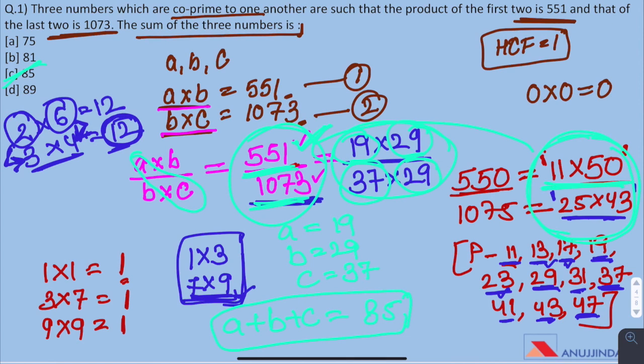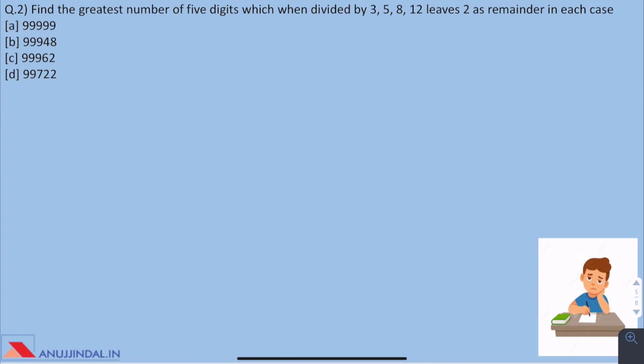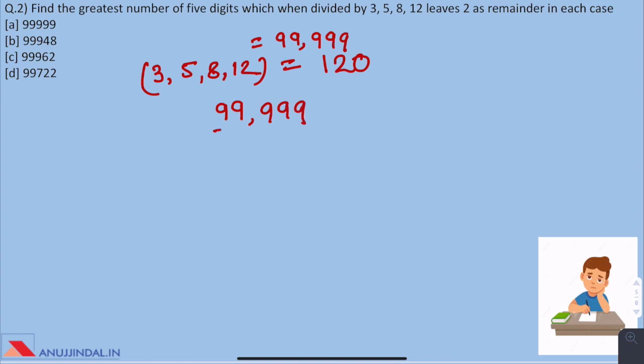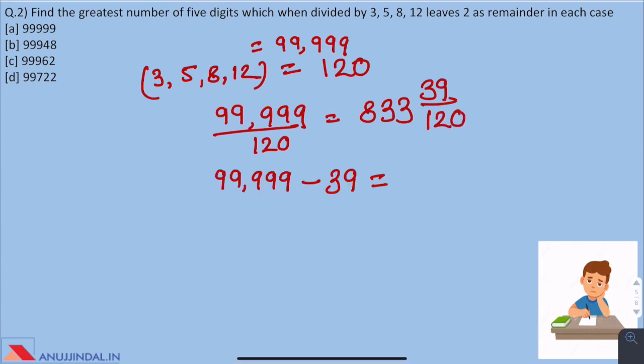Moving forward to question number 2: Find the greatest number of 5 digits which when divided by 3, 5, 8, 12 leaves 2 as remainder in each case. The greatest number of 5 digits is 99,999. Now we simply have to take the LCM of 3, 5, 8, and 12 which comes out to be 120. On dividing 99,999 by 120, we get 39 as remainder. If we minus 39 from 99,999, we get a number which is divisible by 120 and this number comes out to be 99,960.